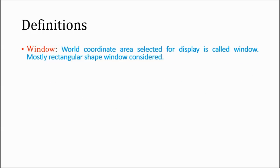First of all, what is meant by window? A window is nothing but the world coordinate area selected for display. For example, in a cricket match, if you want to show a specific area, your camera focus should be in that direction. That world coordinate area you select for display is called a window. The window is most commonly considered as a rectangular shape, though it may be any shape.